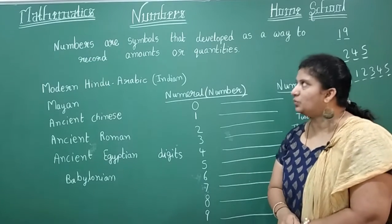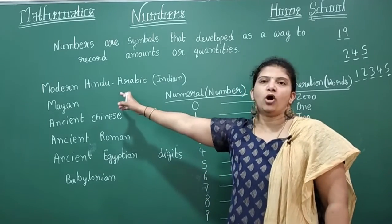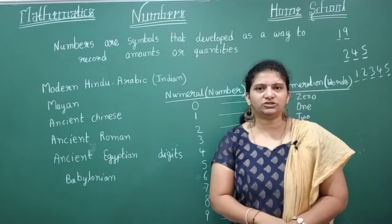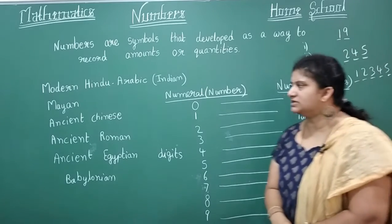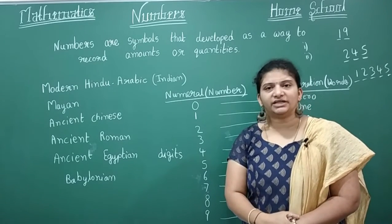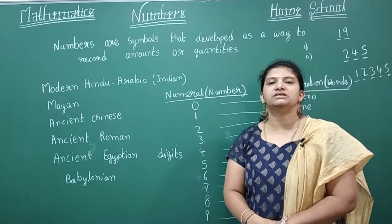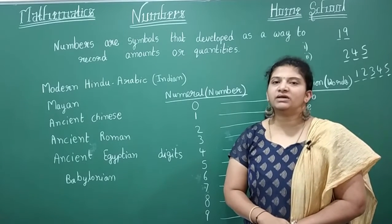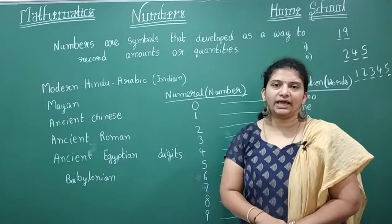Let's recollect what we have seen today. In ancient civilizations, many types of numbers were found. Among all these, we use the modern Hindu-Arabic or Indian system of numeration. Sometimes we also use Roman numerals — for example, in sub-questions. The Hindu-Arabic system was developed by Hindu mathematicians in India and carried to the west by Arabs.